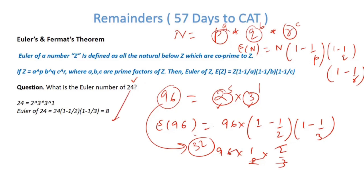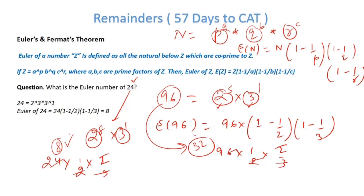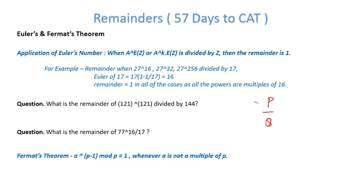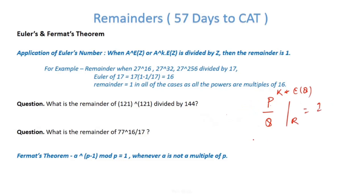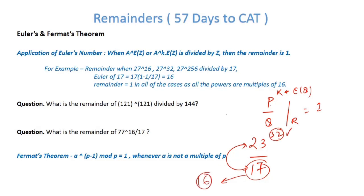Now applying Euler's theorem: whenever p/q has p and q co-prime, and the power of p contains a multiple of φ(q), then the remainder is 1. Example: 23³² ÷ 17. Since 23 and 17 are co-prime, and φ(17) = 16, and 32 = 16 × 2, the remainder is 1.